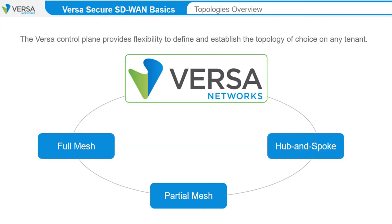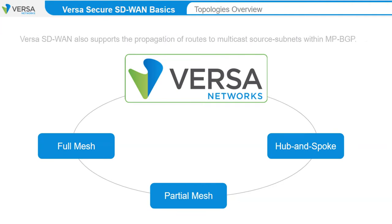Versa Control Plane provides flexibility to define and establish the topology of choice on any tenant. On devices that have multiple VRFs for the same tenant, each VRF can be part of a different topology if desired. Versa's industry-leading SD-WAN solution supports the propagation of routes to multicast source subnets with multi-protocol BGP, allowing the VPN topology for multicast to be different than the unicast topology. For example, the multicast topology can be Hub and Spoke, whereas the unicast topology can be Full Mesh.